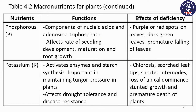Phosphorus is a component of nucleic acids and adenosine triphosphate (ATP). ADP can be used as a phosphorus mechanism. Phosphorus affects the rate of seedling development and the timing of maturity. The plant has a very limited supply of phosphorus from roots.